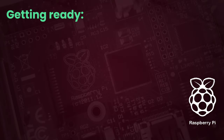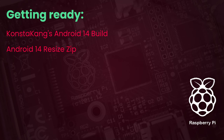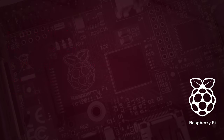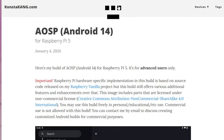We will go ahead and download all the files we need, which are as follows: Consta King's Android 14 build for Raspberry Pi 5, the Android 14 Resize Zip to make full use of the storage available on the micro SD, Mine the Gaps for Play Store access, the device ID APK to obtain the Google Services ID from the Pi 5, and lastly the Raspberry Pi Imager tool. Let's start by heading over to Consta King's website to grab the Android 14 build created for the Raspberry Pi 5. I will have a link to the website down in my description.